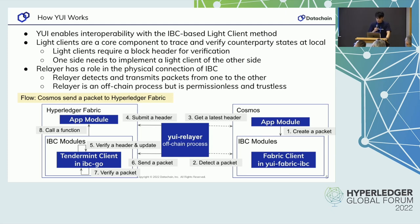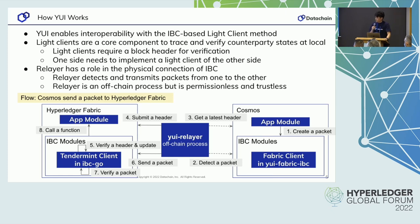In step one, a sender creates a packet to be sent to Fabric in Cosmos. Next, until step five, the YUI relayer detects the packet, gets the latest header from Cosmos, and submits it before sending the packet to Fabric — because the Fabric side needs to know the latest states of Cosmos to verify a packet. Then the relayer sends the packet to Fabric, and Fabric verifies it by the Tendermint client. If the packet is verified, Fabric calls a function according to the packet. This is part of the sequence for sending a packet using YUI; more steps are required, but some are omitted for simplicity.